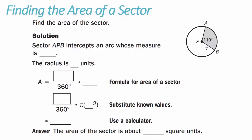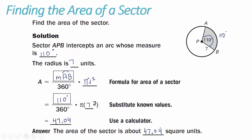Example 2: Finding the area of a sector. Find the area of the shaded region in the circle. Sector APB intercepts an arc whose measure is 110 degrees. Since angle APB is a central angle, the measure of arc AB is also 110 degrees, and the radius is 7 units. To find the area: take 110 over 360 times pi times 7 squared. Simplifying gives the area of the sector as approximately 47.04 square units.